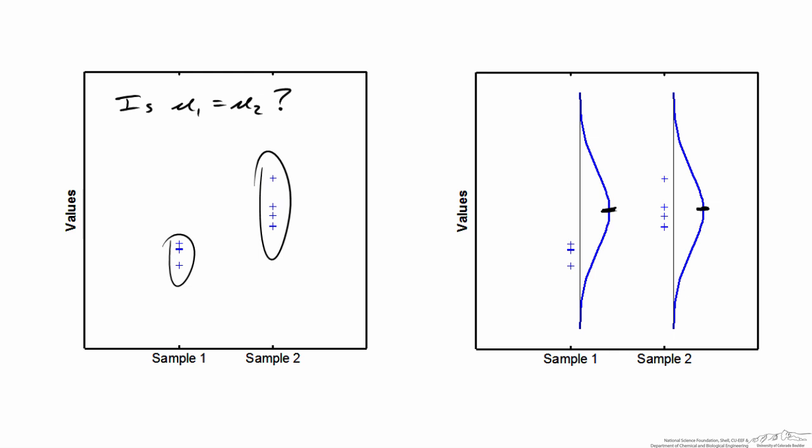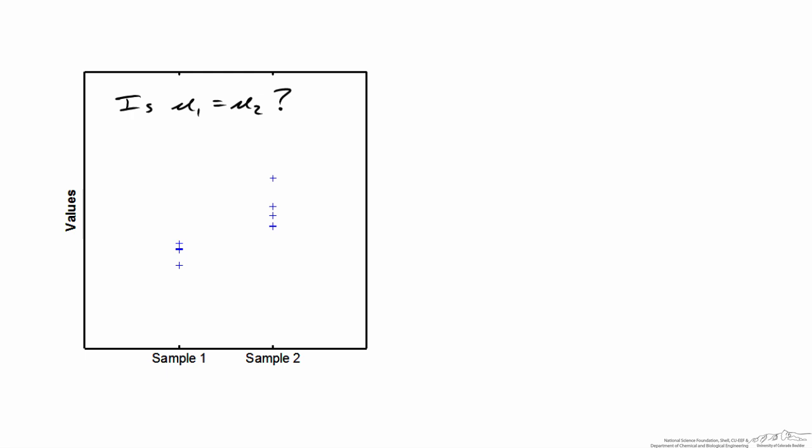What I've done, again, is incorrectly reject the null hypothesis and made a type 1 error. But in reality, we don't ever get to know those distributions. All we know is to ask the question, is mu1 equivalent to mu2?